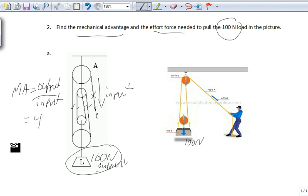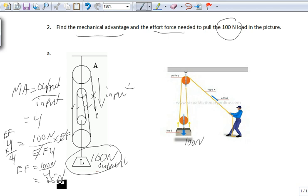Okay, so now let's use this. So if the MA is 4 and the output is 100 newtons, we can find the input or the effort force. So let's times both sides by effort force. That's 1. Times this by effort force. Let's divide by 4 by both sides. That's 1. So effort force equals 100 newtons divided by 4. So what does that equal? 25 newtons.